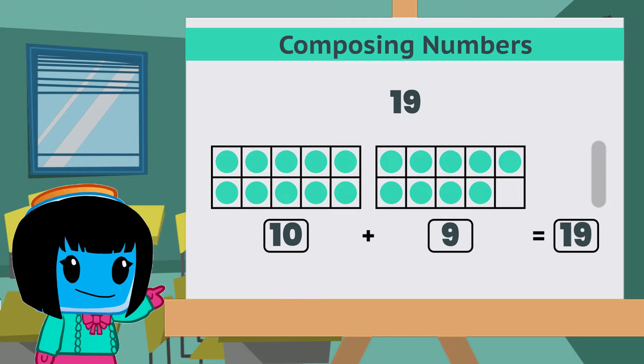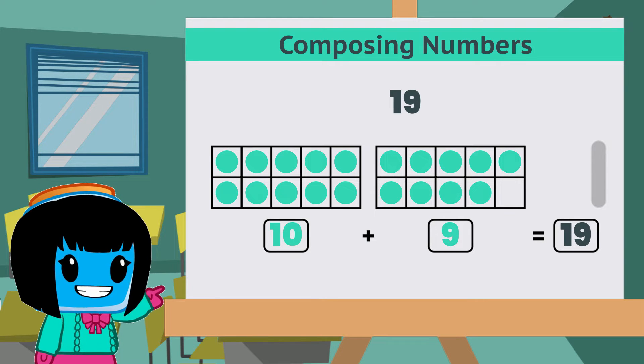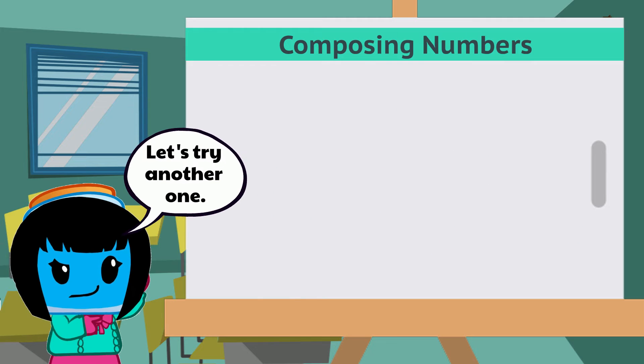So to compose 19, we can add 10 and 9. Let's try another one.